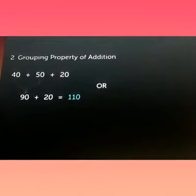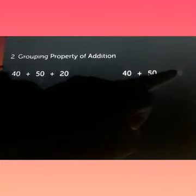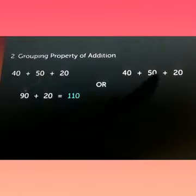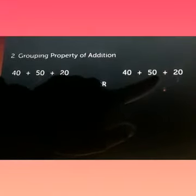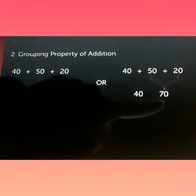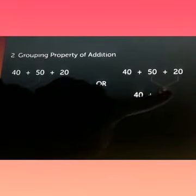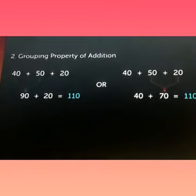Now another example. If I add 40 plus 50 plus 20, but now I add 50 and 20 first, what will I get? 70. Now in 70, I will add 40. 70 plus 40, the result will be 110.